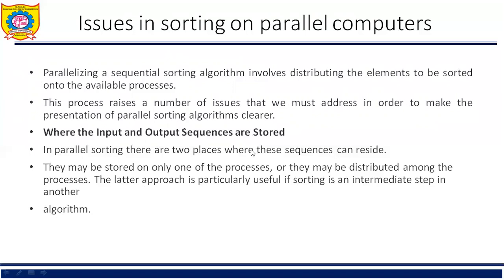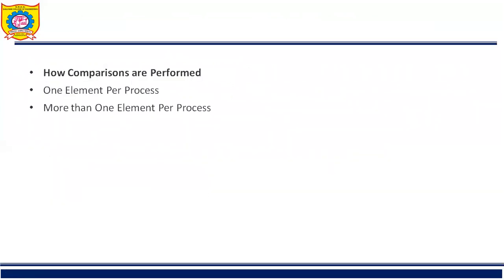In parallel sorting, sequences may be stored on only one process or distributed among processes. The latter is useful when sorting is an intermediate step. Another issue is how comparisons are performed. A sequential algorithm can easily perform a compare and exchange on two elements stored locally. In parallel sorting, if elements reside on the same process a comparison is easy, but if they reside on different processes the situation becomes more complicated.